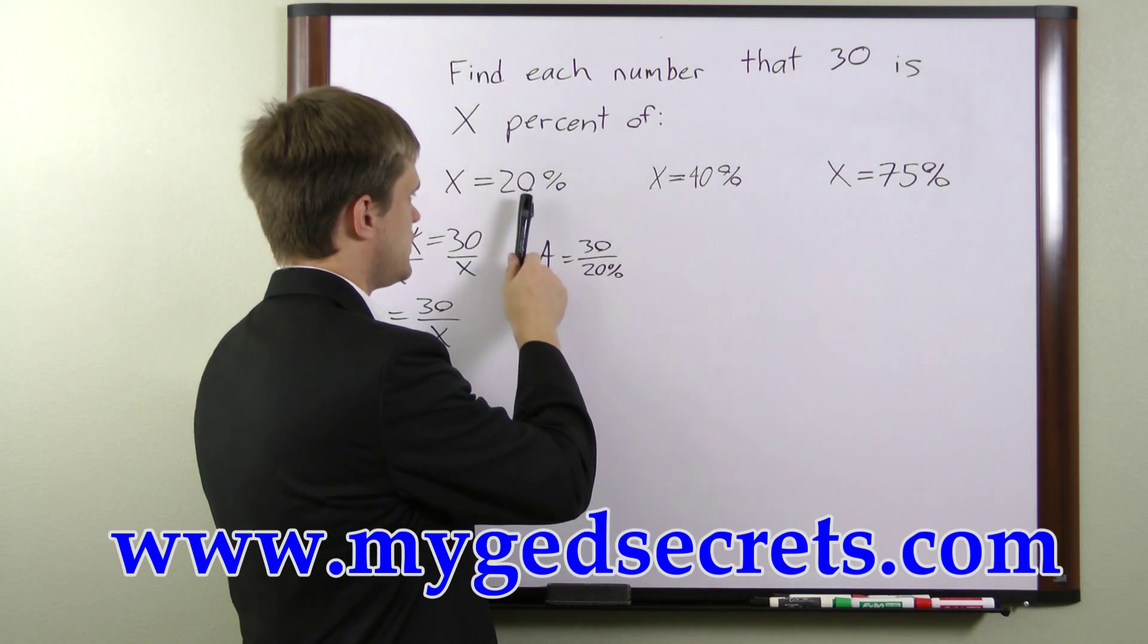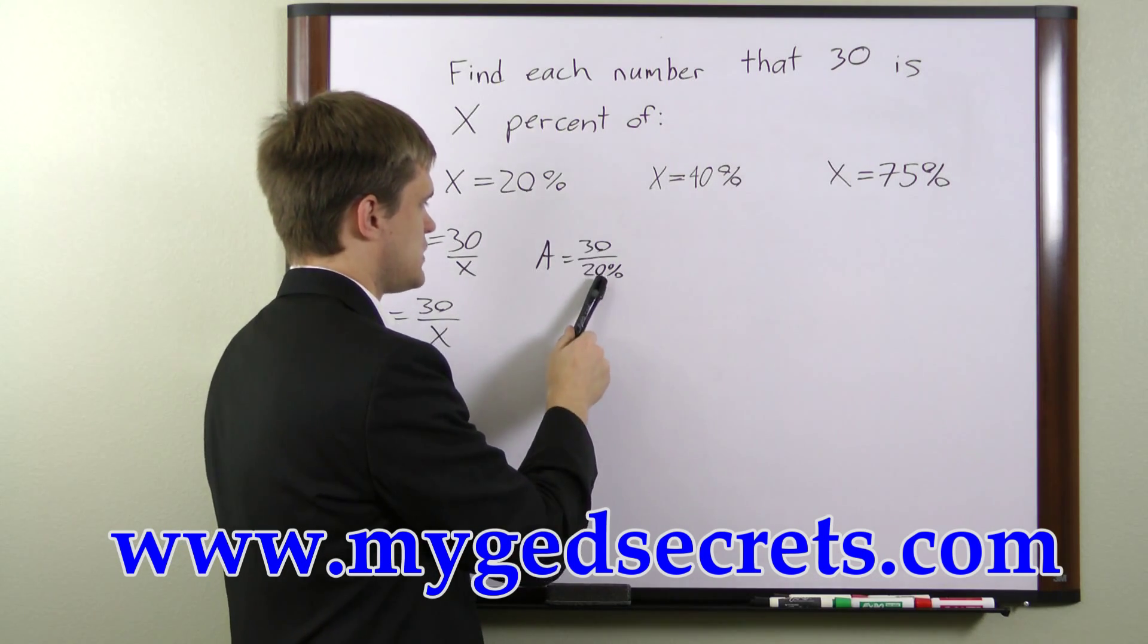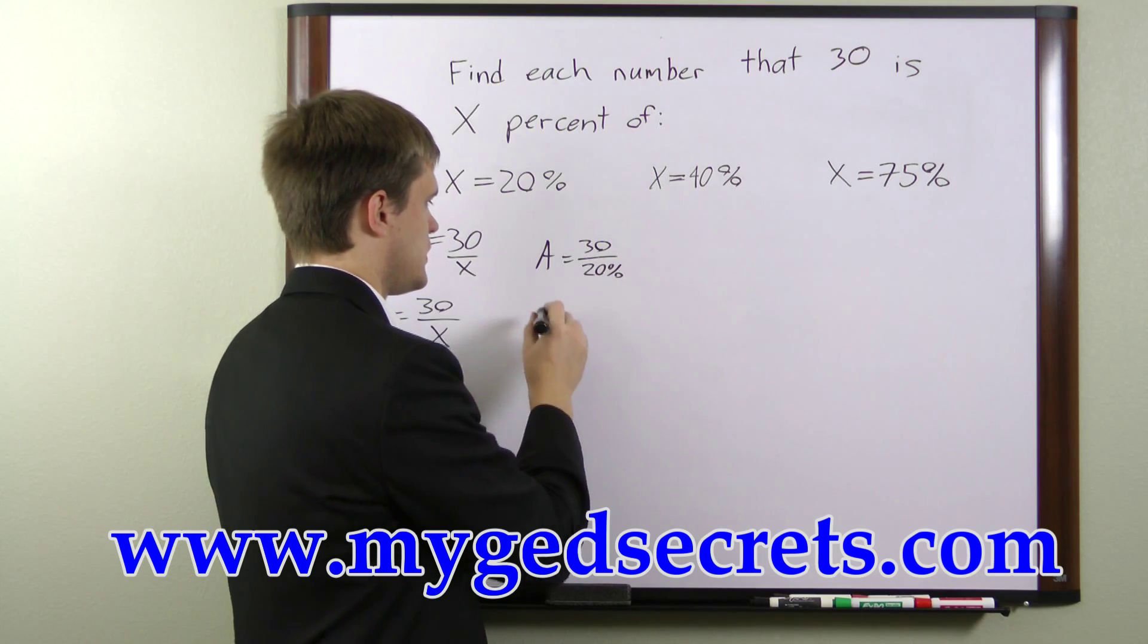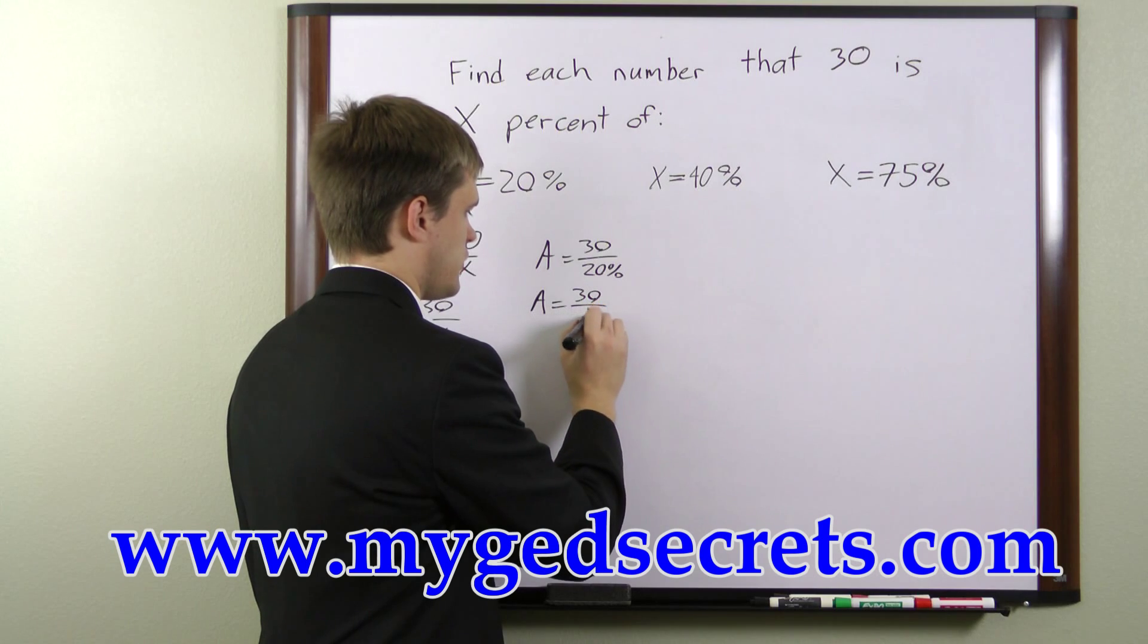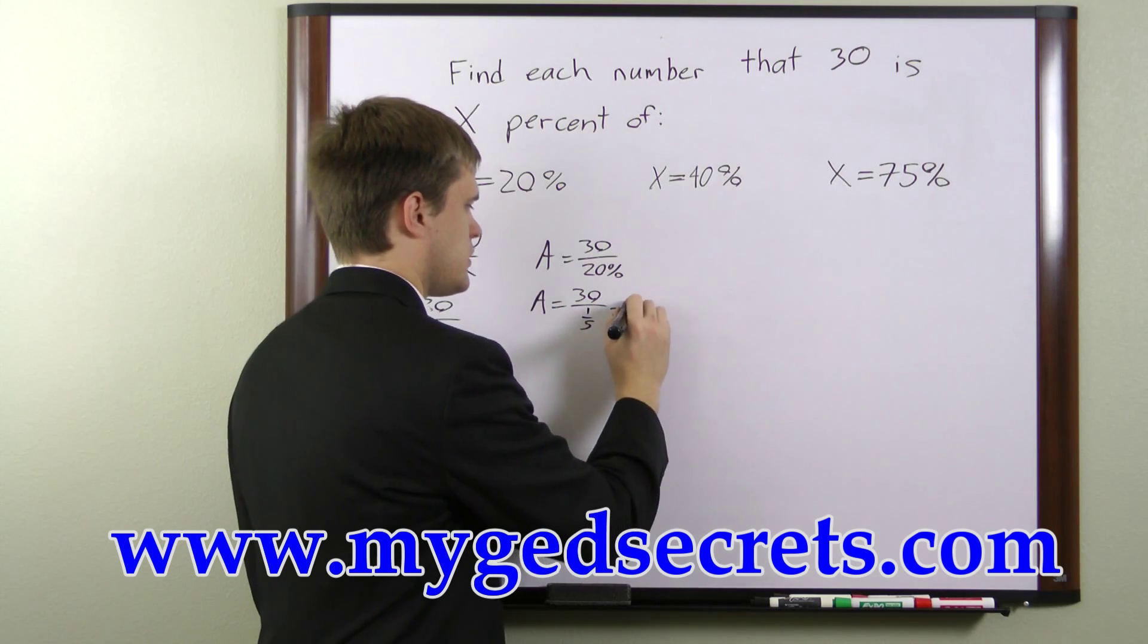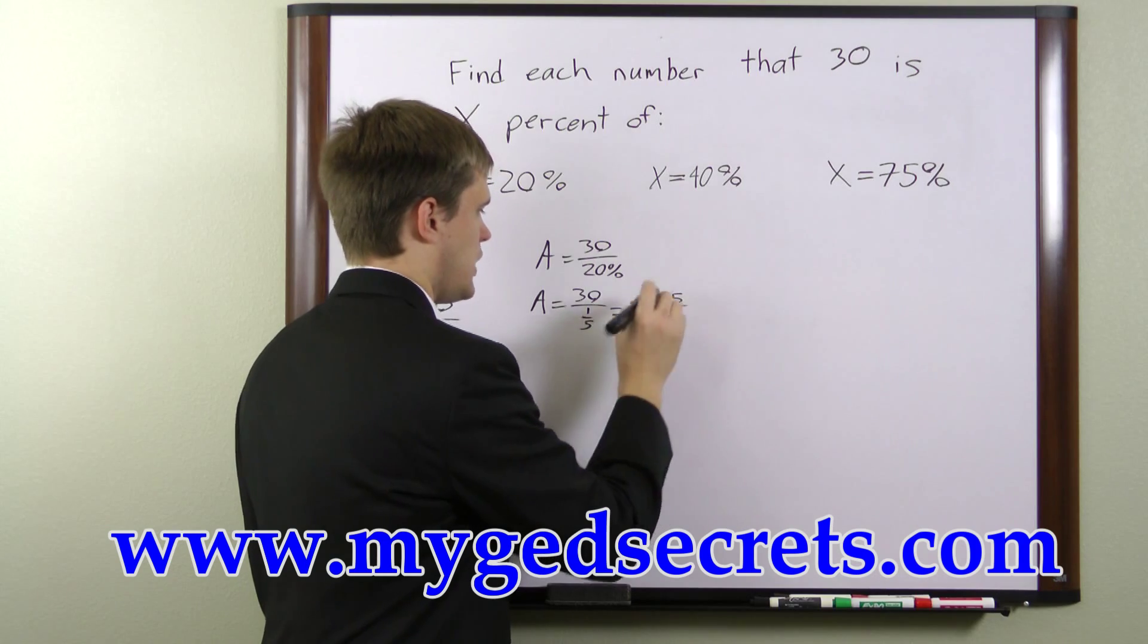The fractional equivalent of 20% is 1/5, so we can say that a equals 30 over 1/5, or 30 times 5 over 1.